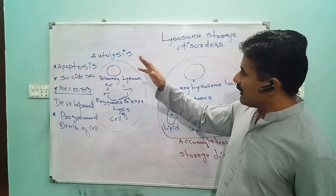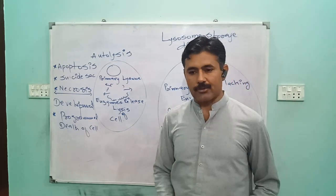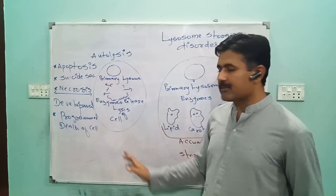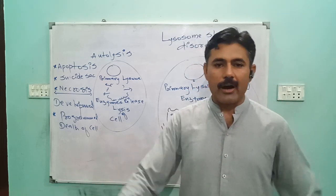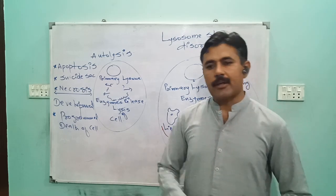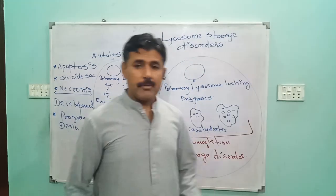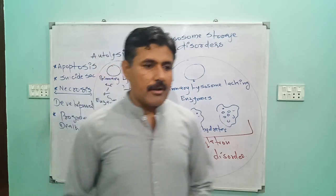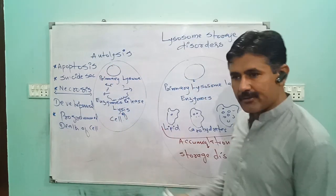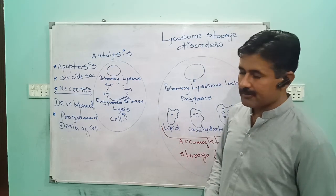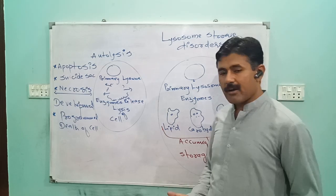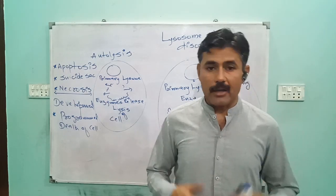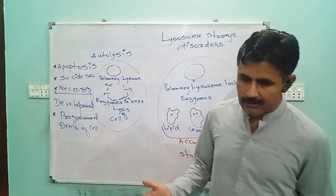Lysosomes, in order to destroy cells, burst and release their digestive enzymes. When these digestive enzymes are released, they destroy all components of the cell, and finally the cell dies. This process is called autolysis. When lysosomes fail to perform intracellular digestion — for example, if they lack enzymes and cannot carry out intracellular digestion — that results in certain problems and diseases.